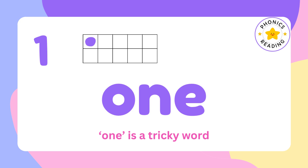O-N-E 1. One is a tricky word. Tricky words cannot be sounded out. If we read it as O-N-E, it doesn't make any sense. So we have to learn it as O-N-E: 1.